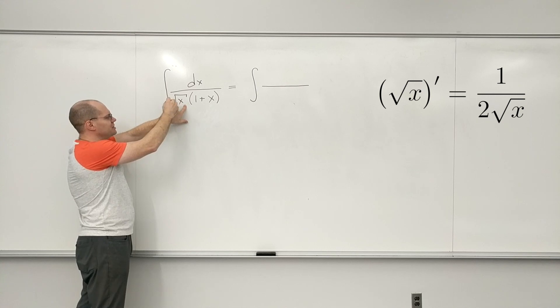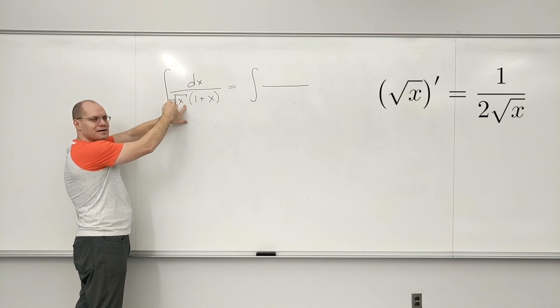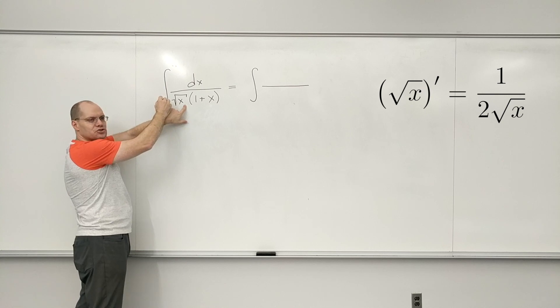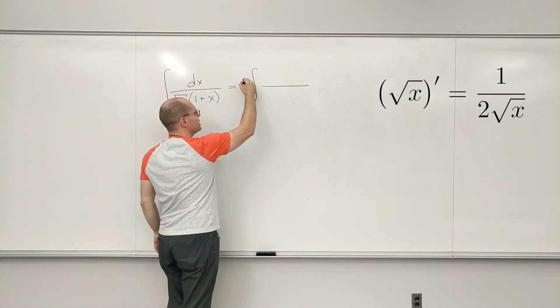And because there's a 2 missing on the bottom, I'll throw it in mentally on the bottom and make up for it with the 2 on the outside. So I will basically write this. This would be my next step.